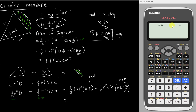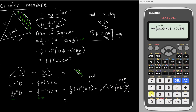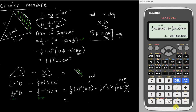I change the calculator to degree mode — number 1 for degree — and you can see 'D' on top. I type: ½ × 10² × 0.8 − ½ × 10² × sin(0.8 × 180/π), and close the bracket. I press equal, and the final answer is 4.1322 cm² — exactly the same answer as before.